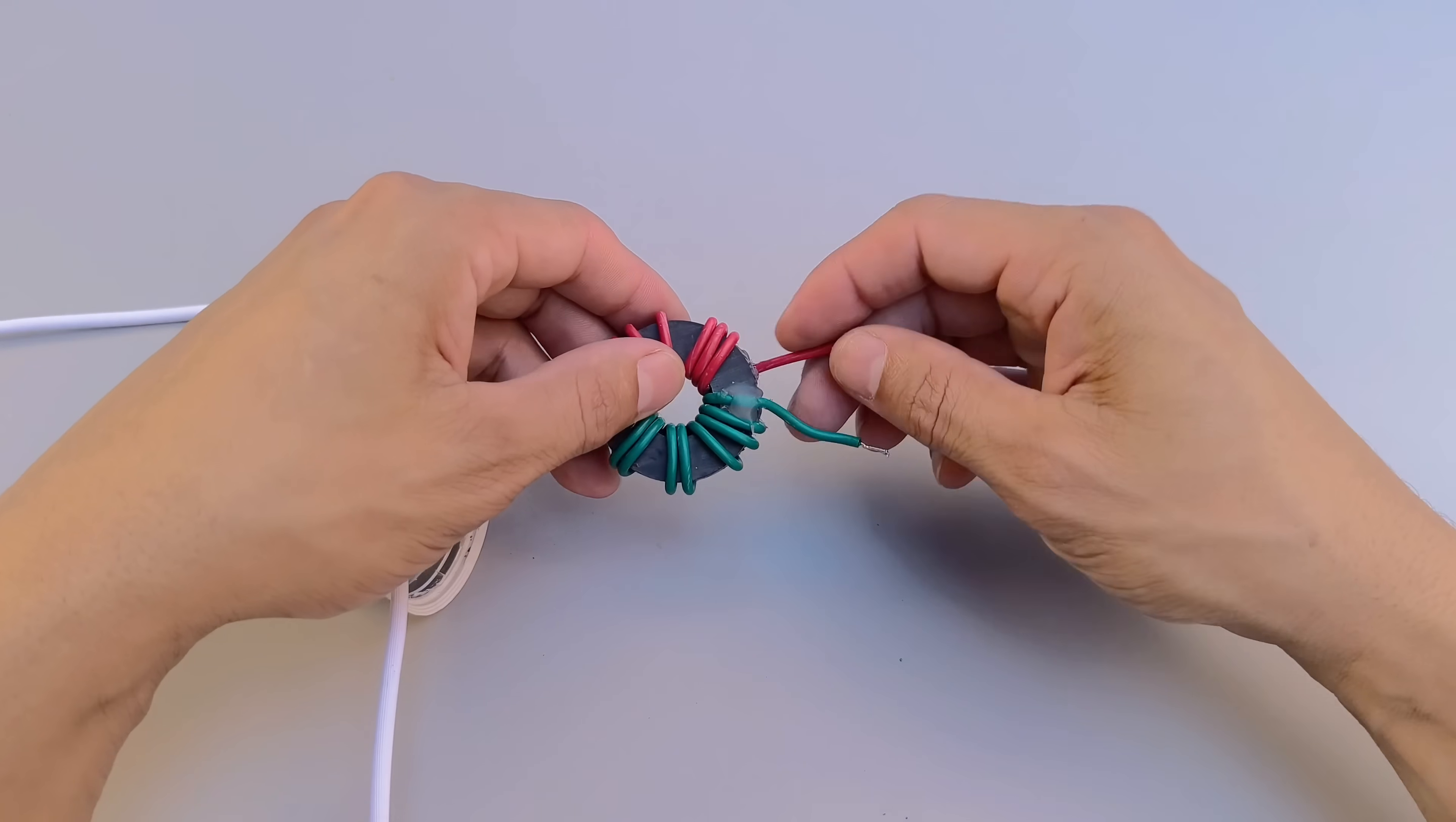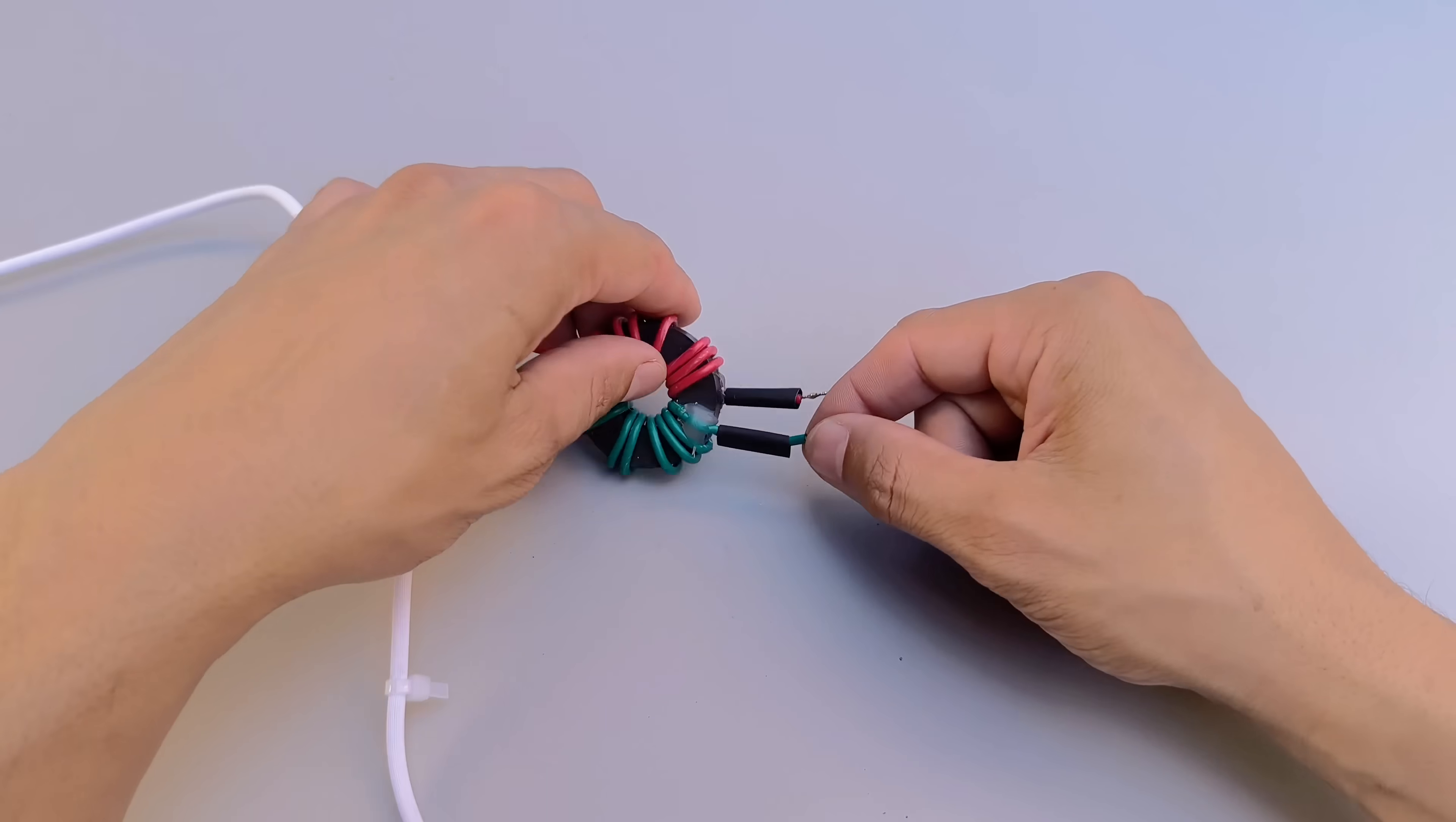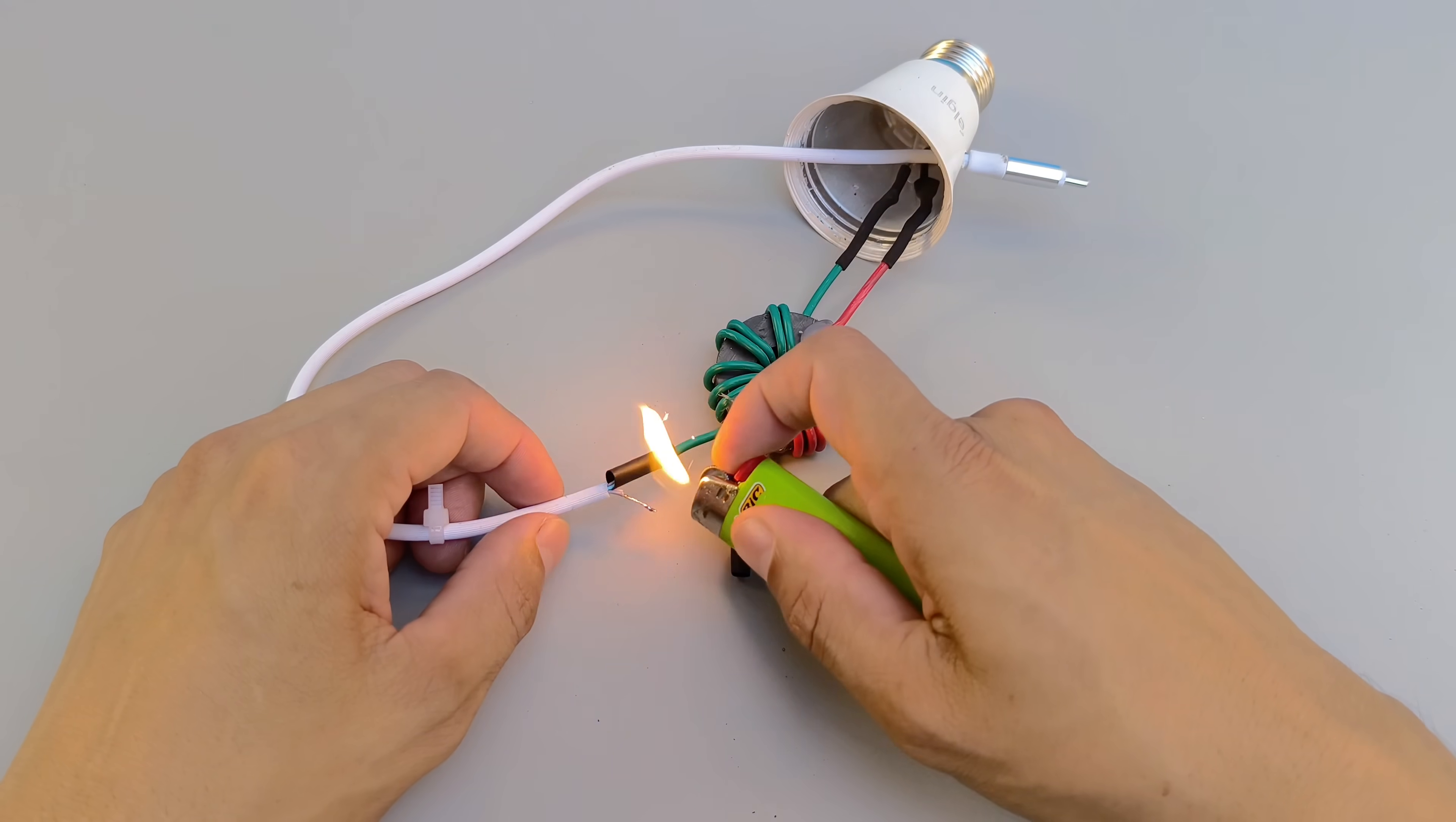The remaining two wires of the electromagnet must be soldered to the terminals of the USB cable. Once again, do not forget the heat shrink insulation, which is essential to avoid any unwanted contact between the wires. The soldering process here must be careful, ensuring that the wires are well secured and that there is no risk of poor contact.